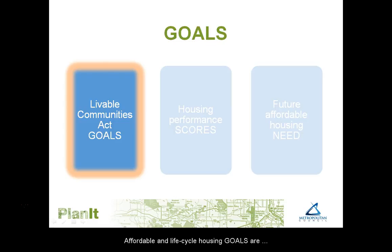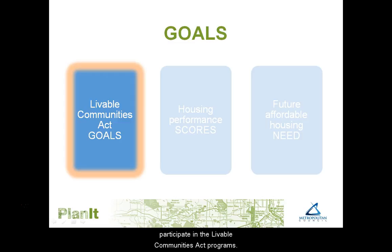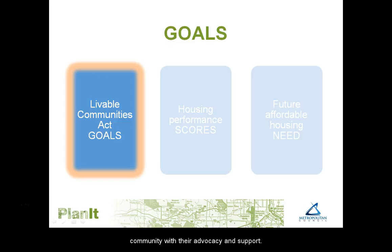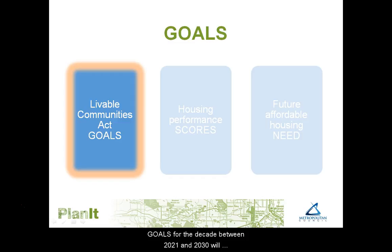Affordable and life cycle housing goals are negotiated between the Council and cities that participate in the Livable Communities Act programs. Goals represent the number of new affordable and life cycle housing units a city thinks could be built in their community with their advocacy and support. There are no direct consequences for cities that do not meet their goals. Goals for the decade between 2021 and 2030 will be negotiated with Livable Communities Act participants in 2019.